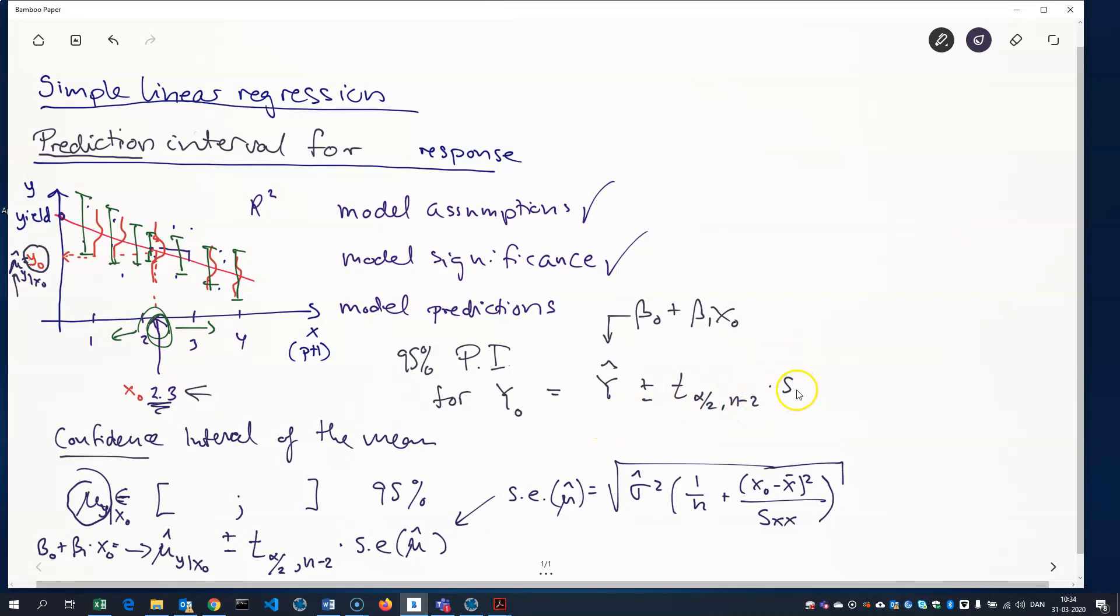And again, we need the T quantile with n minus 2 degrees of freedom. And then we need the standard error of the response. And the standard error is almost the same as for the mean. We have the variance estimate. And then we have a one term here, which wasn't present in the previous, but the rest is the same. So we get x0 minus x-bar squared over the deviation sum squared. So that's the only difference.